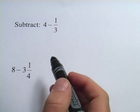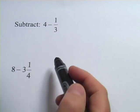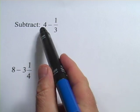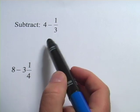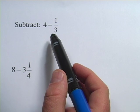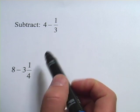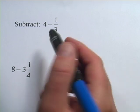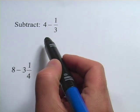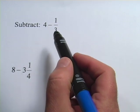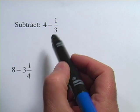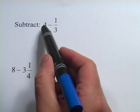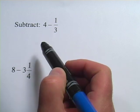In these problems, we're doing some subtraction using integers or whole numbers and fractions. There are some tricks you should learn about this. One way you could do this, although it's kind of a lot of work, is to convert this into thirds.